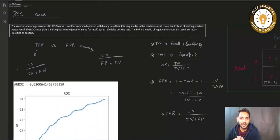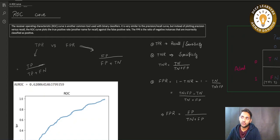Hi, I am Mehmed Dao and in this session we are going to see the ROC curve. ROC curve — the receiver operating characteristic curve — is another common tool used with binary classifiers.